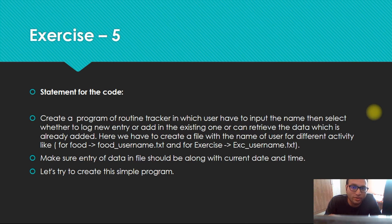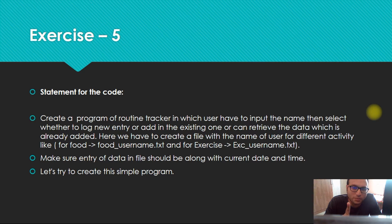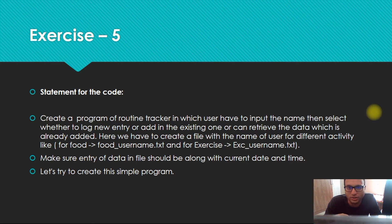Now the third scenario: the person logs in again, accesses the code, and goes into the retrieve section. Throughout the day the person has put a couple of entries in the file and now wants to see what entries are present. In the retrieve section, the person selects the activity — for example, food — and whatever file is present in the directory gets fetched and displayed on the screen, showing all entries for the entire day, week, or whatever period. This is the simple code I'll try to make here.